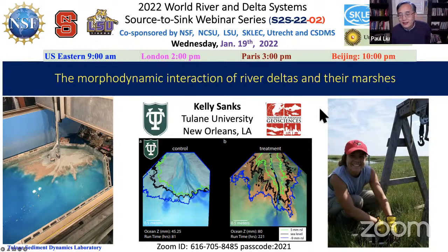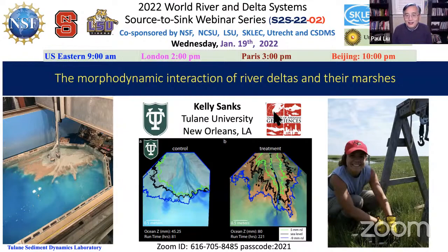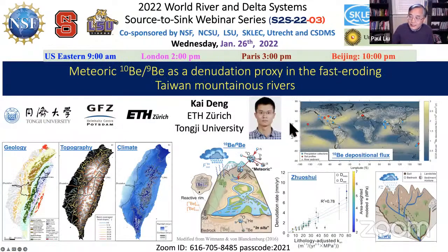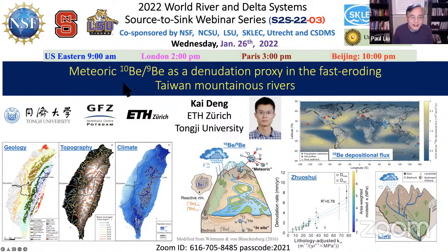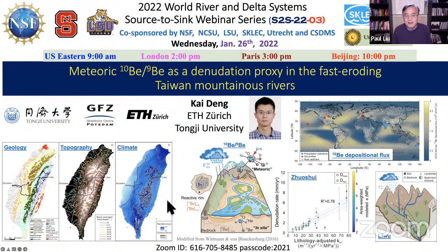Today it is our great honor to have Dr. Kelly Sanks from Tulane University come here to talk about morphodynamic interaction of river deltas and their marshes. Before I introduce Kelly, I would like to mention next week, at the same time, we have Dr. Kai Deng from ETH Zurich and Tongji University, who will talk about meteoric beryllium-10 and -9 ratio as a denudation proxy in the fast-eroding Taiwan mountain rivers. This should be a very interesting talk on these small rivers that discharge a large amount of sediment from the island. Please mark your calendar.